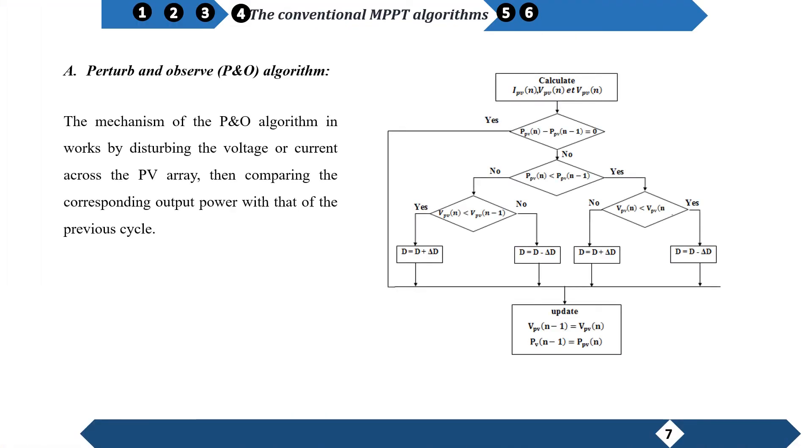Starting with the classical methods, perturb and observe P&O algorithms. The mechanism of the P&O algorithms works by distributing the voltage or current across the PV array, then comparing the corresponding output power with that of the previous cycle.